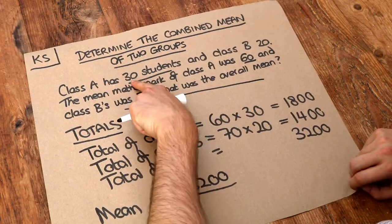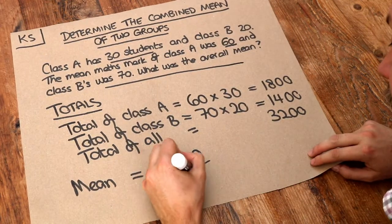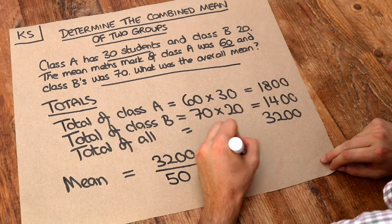Well we've got 30 students in class A, 20 students in class B, that's 50 students in total and then when we do that division we get 64.